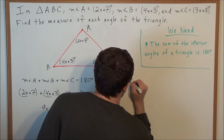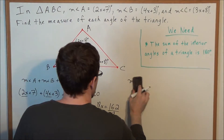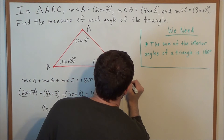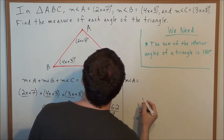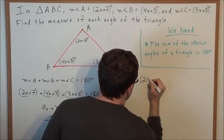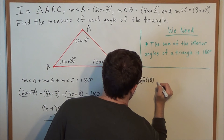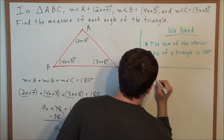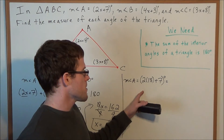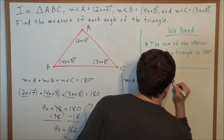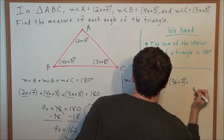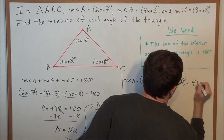The measure of angle A equals 2x plus 7 degrees. Since x is 18, we replace x with 18: so we have 2 times 18 plus 7 degrees. Now 2 times 18 is 36, so we have 36 plus 7 degrees, which means the measure of angle A is 43 degrees.